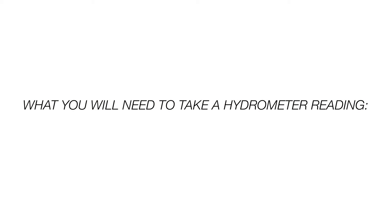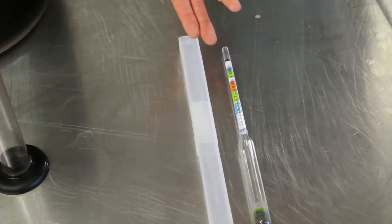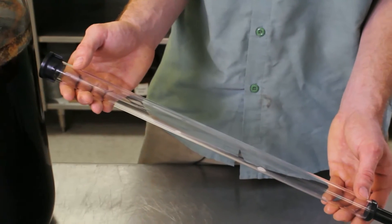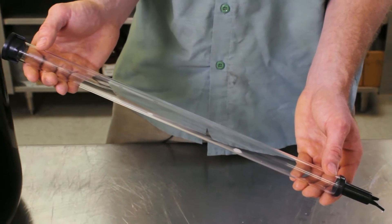Here is a list of equipment you will need to take a hydrometer reading: a hydrometer, a test jar, and a thief to take a sample of your wort out of the carboy.